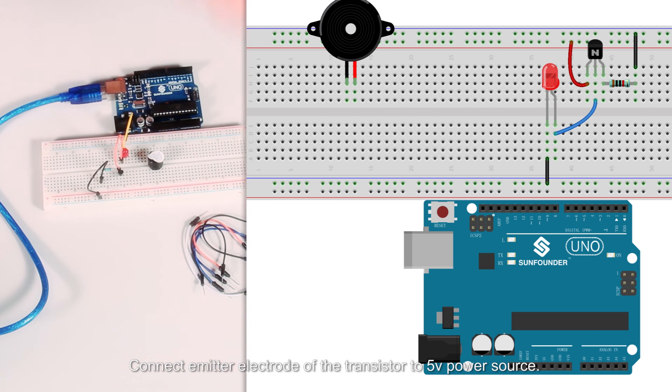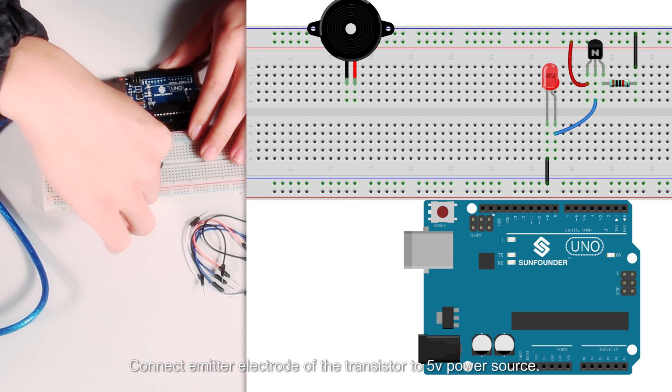Connect emitter electrode of the transistor to 5V power source.